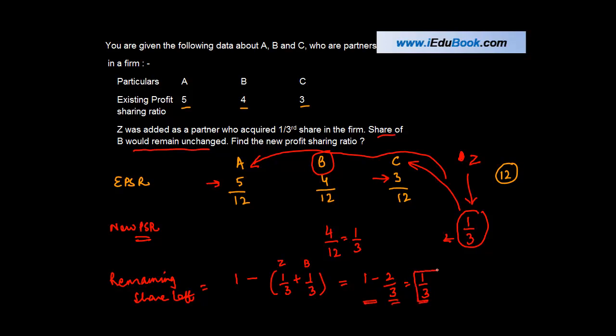Or 1 minus 2 upon 3, which is 1 upon 3. So one-third of the share belongs to A and C. Now in what ratio? This ratio is nothing but the ratio in which they were sharing their profits earlier, which is 5:3.